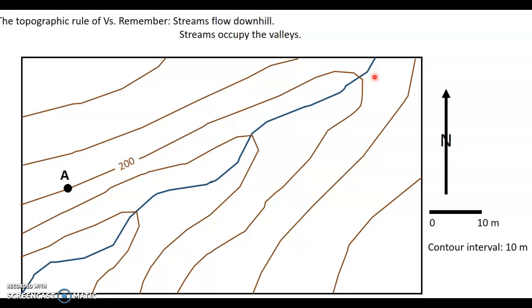And you should be able to remember this, but if you can't, you've got to be able to explain it to yourself. The topographic contour lines, these lines of equal elevation, they always form a V that points in the upstream direction. So remember that. But if you can't remember that, you ought to be able to explain it to yourself.